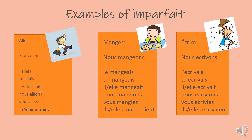So if we look at the endings: -ais for je and tu, then for il ou elle it's -ait. For nous allions: -ions, vous alliez: -iez, ils allaient: -aient. The next example is manger. With manger, the nous form in the present tense is nous mangeons, which is E-O-N-S. After removing the -ONS ending, we get the stem as mange, M-A-N-G-E, and then we simply add the imparfait endings.